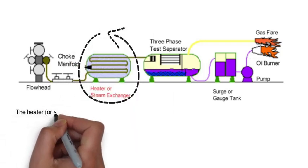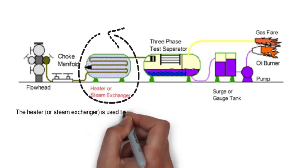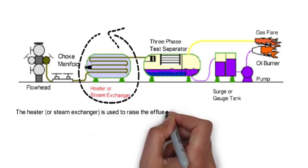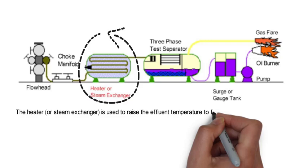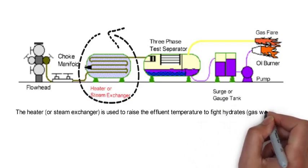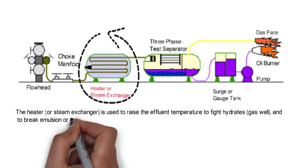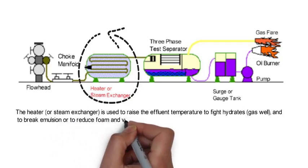The heater or steam exchanger is used to raise the effluent temperature to fight hydrates in the gas well and to break emulsion or to reduce foam and viscosity in the oil well and improve burning.